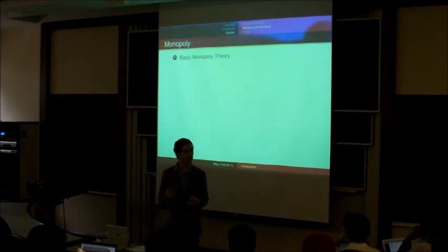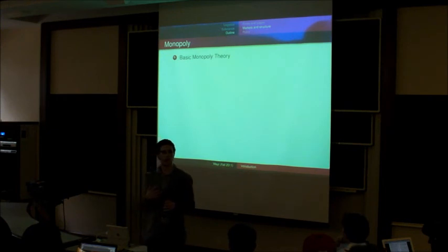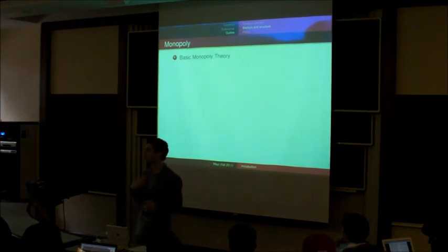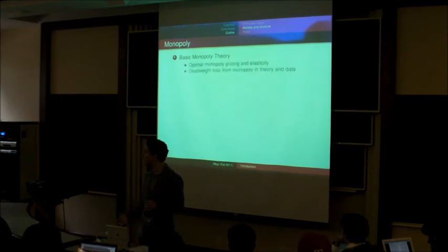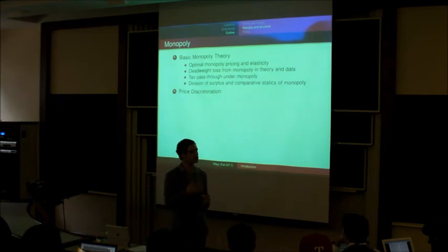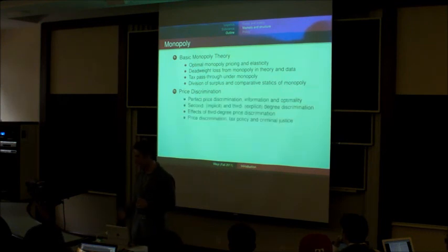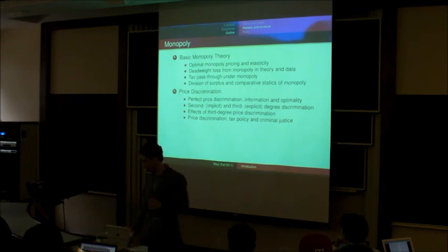We'll then talk about monopoly theory and why monopolists tend to reduce the amount produced, and therefore harm welfare, and how that's related to how they respond to taxes and subsidies that are given to them. We'll talk about price discrimination, when companies charge different prices to different consumers, or different prices for different amounts that people purchase. And when that's efficient and inefficient, and how that relates to tax policy and to the criminal justice system.